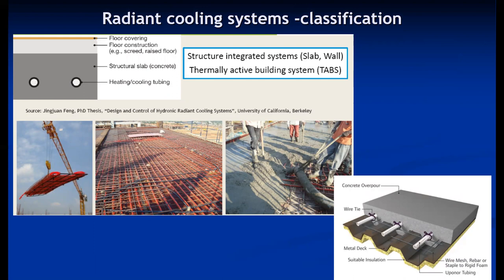Structure-integrated systems are installed during the construction of the building itself. A typical cross-section shows: flooring, floor construction, and then inside the structure these pipings are embedded. The heating and cooling tubing is an integral part of the building structure, which is why it is called an integrated system.